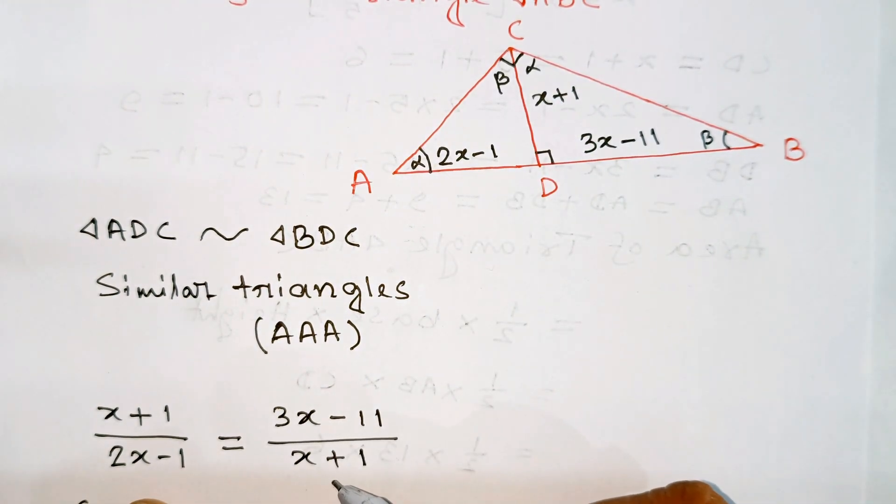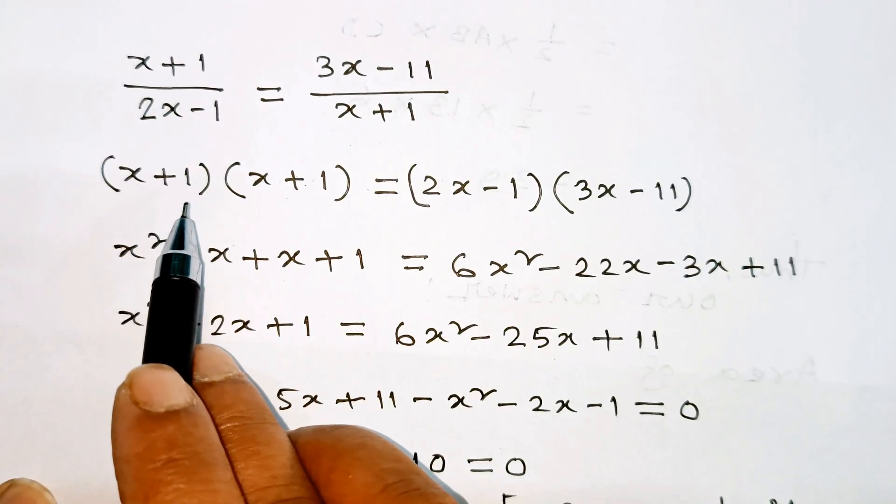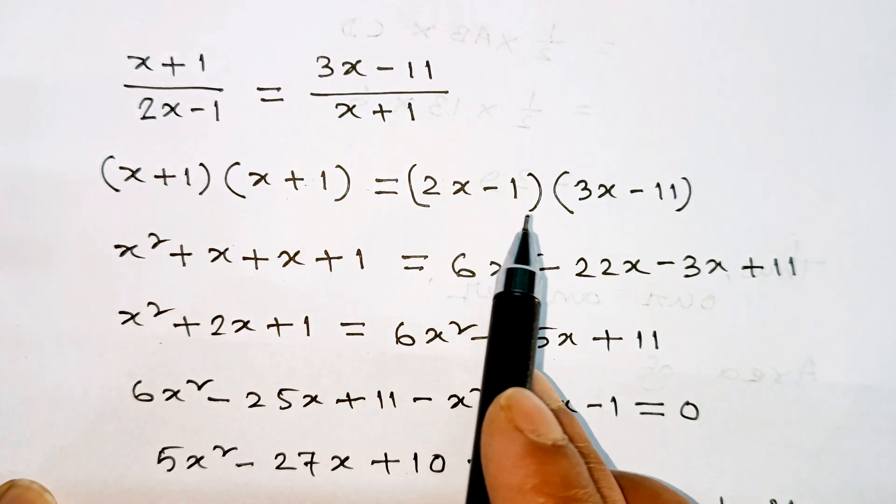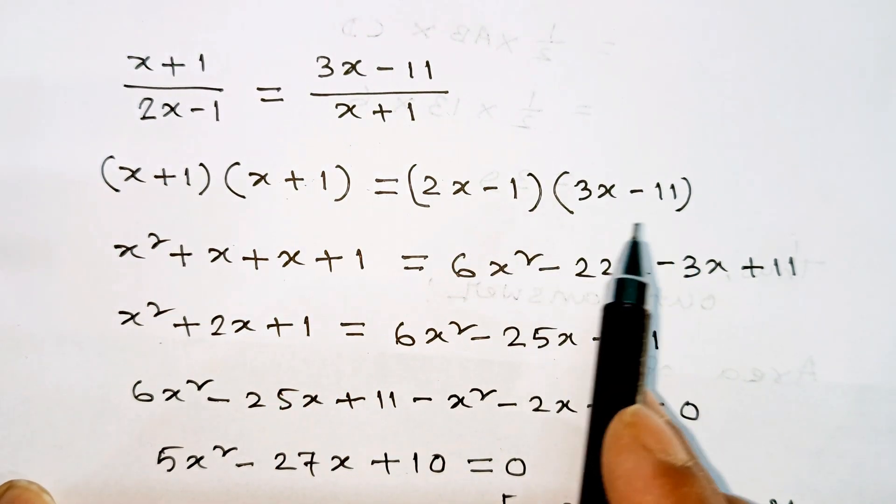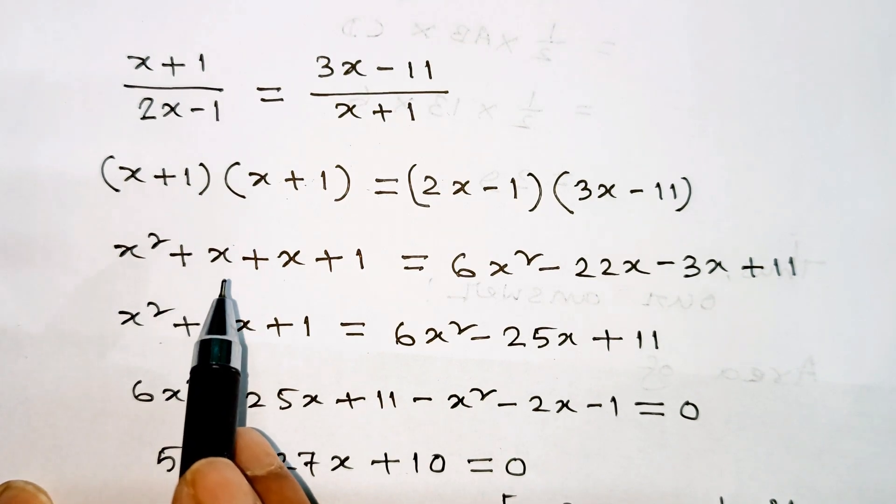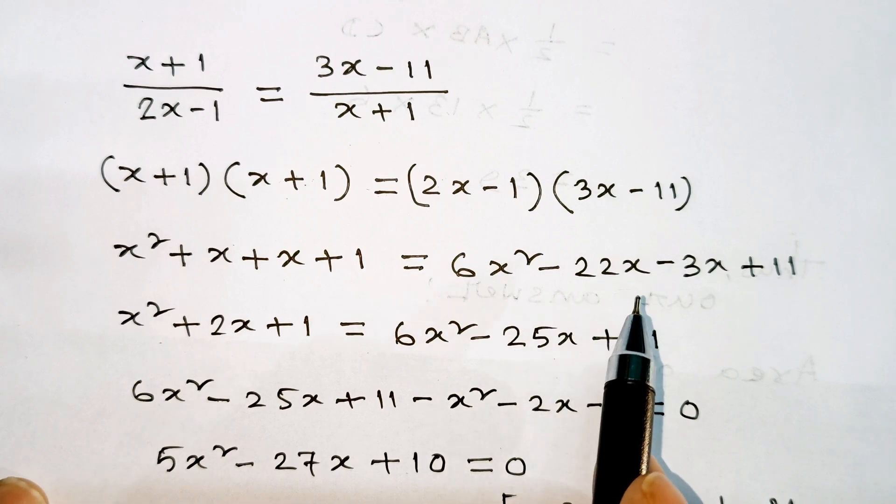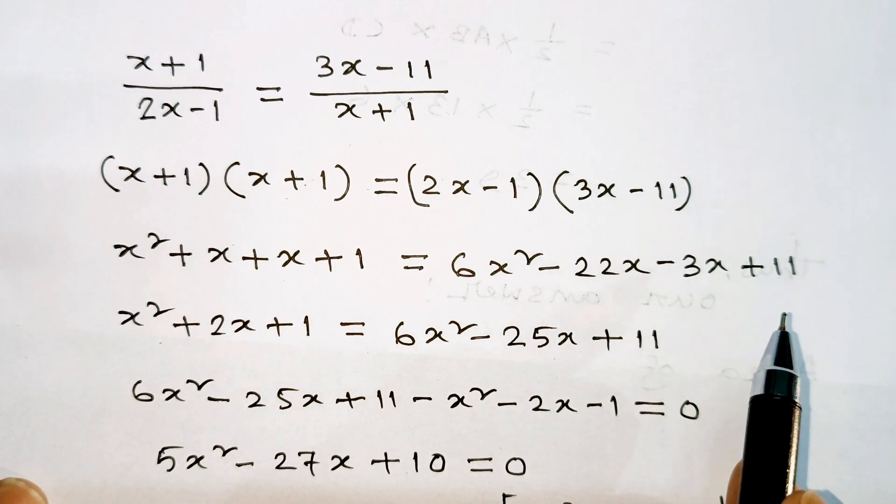Then cross multiplication: x plus 1 times x plus 1 equals 2x minus 1 times 3x minus 11. This gives x squared plus 2x plus 1 equals 6x squared minus 22x minus 3x plus 11.